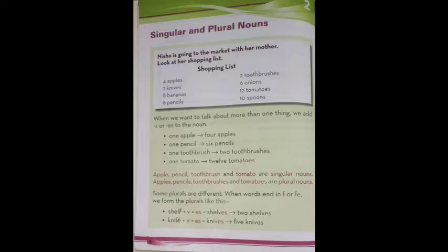Now, you have seen that the number is more than the quantity, right? When we want to talk about more than one thing, we add S or ES to the noun. So, if we want to talk about more than one thing, then what do we do? We add S or ES to the noun.